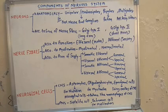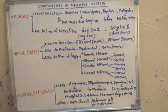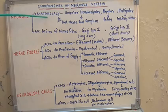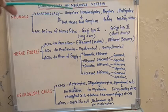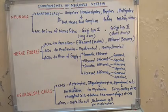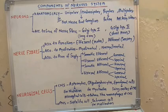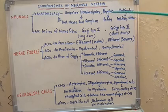So in this video we will discuss the types of all three. First of all, the neurons. Anatomically, the neurons are mainly three types: unipolar neurons, which are also known as pseudo-unipolar neurons, then bipolar neurons, and then multipolar neurons.